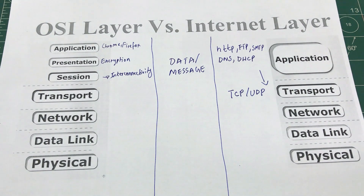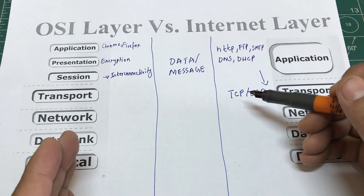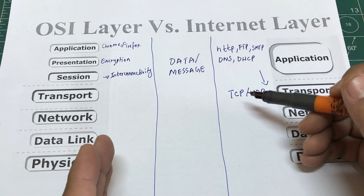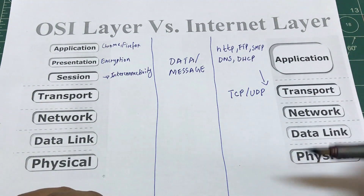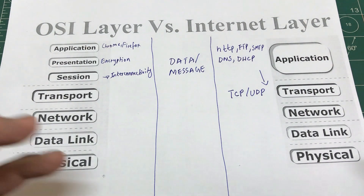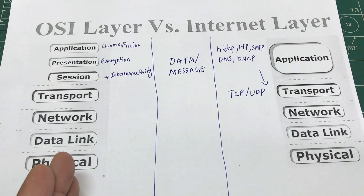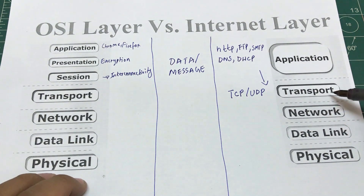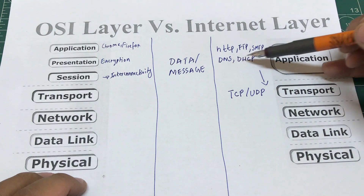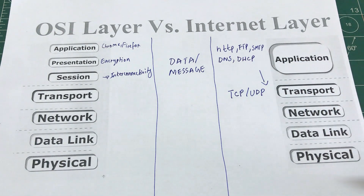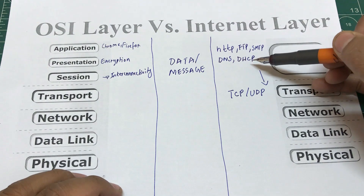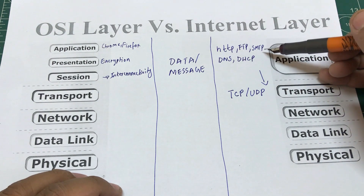In wired networks like Ethernet, this is done by requesting retransmission. TCP asks the sender to retransmit data that has an error. This makes TCP bulkier. Some services like DNS and DHCP don't require retransmission — you can just refresh the page. So DNS and DHCP use UDP, while HTTP, FTP, and SMTP use TCP.